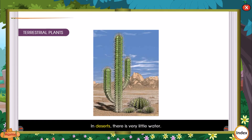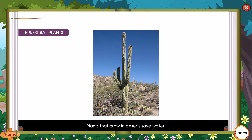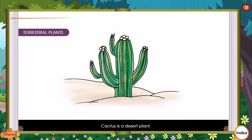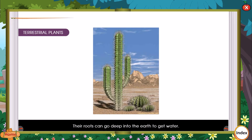In the desert, there is very little water. Plants that grow in deserts save water. Cactus is a desert plant; it stores water in its thick, fleshy stem. The leaves of such plants are reduced to spines. Very little water is lost into the air through such narrow leaves. Their roots can go deep into the earth to get water.